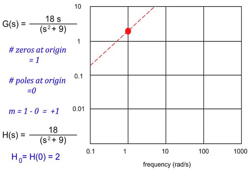You'll note this has a zero at the origin but does not have a pole at the origin. So m is equal to plus 1, just like in the previous example. We form H of s by removing the zero from the origin, so that gives H of s equal to 18 over s squared plus 9. And then we can find H sub zero — it's equal to 2. So we can draw a point at 1 radian per second at the value 2, and we can draw the low frequency asymptote through this point with a slope of plus 1, shown here as the dotted line.